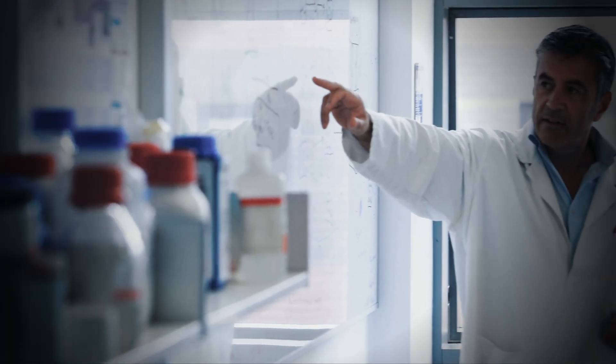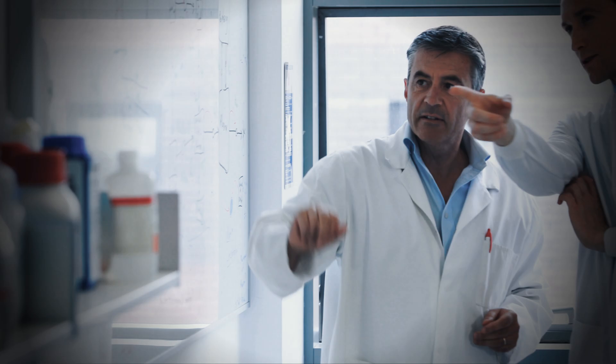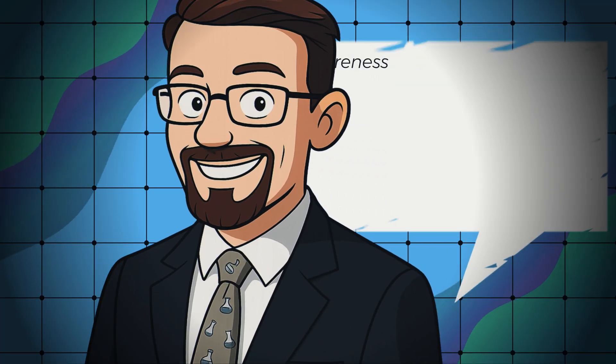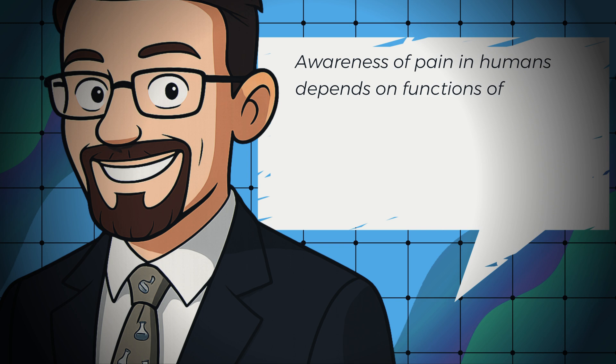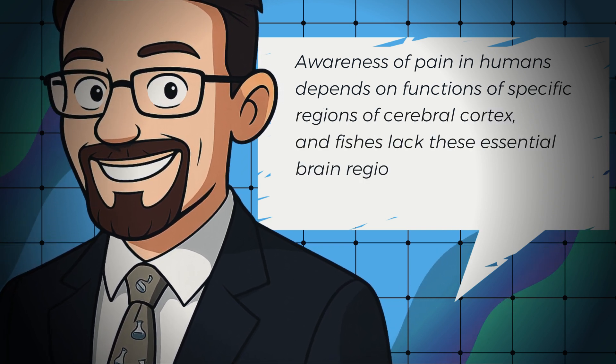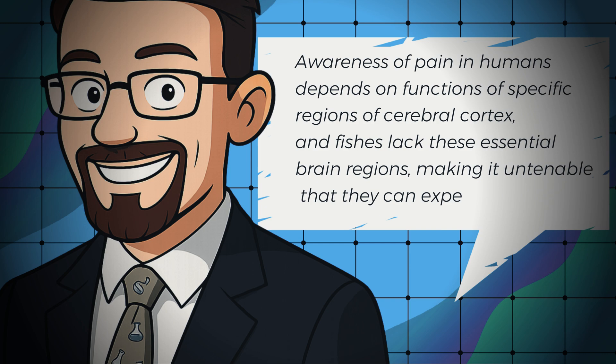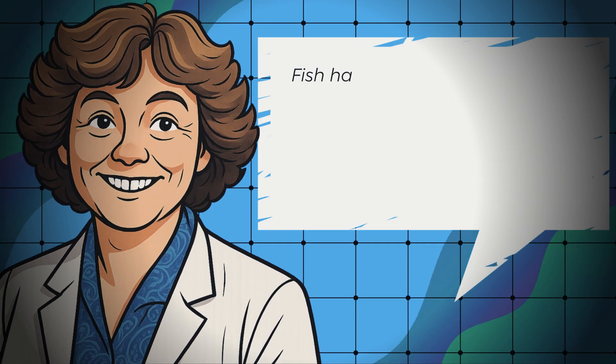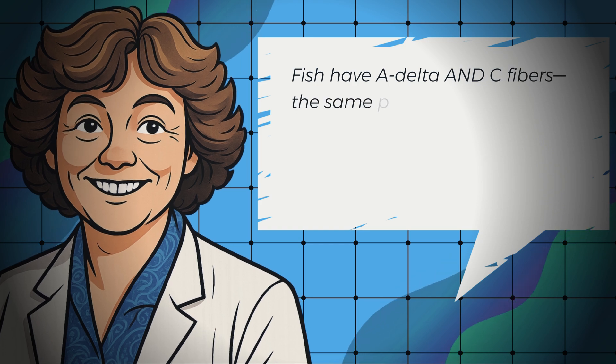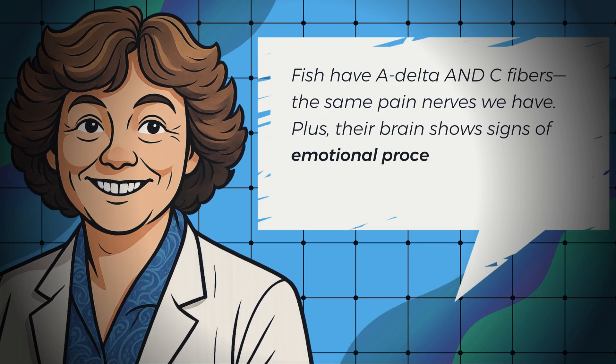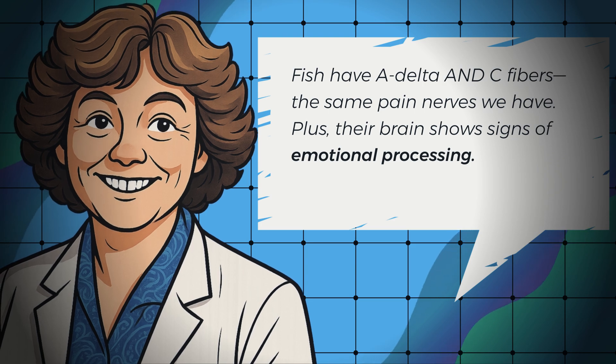How are scientists still arguing about this? Here's where it gets heated. In the first study I cited, Dr. James Rose says that awareness of pain in humans depends on specific regions of the cerebral cortex. Fishes lack these brain regions and thus lack the neural requirements necessary for pain experience. But in her research, Dr. Victoria Braithwaite found that fish have A delta and C fibers, the same pain nerves we have. Plus, their brain shows signs of emotional processing.